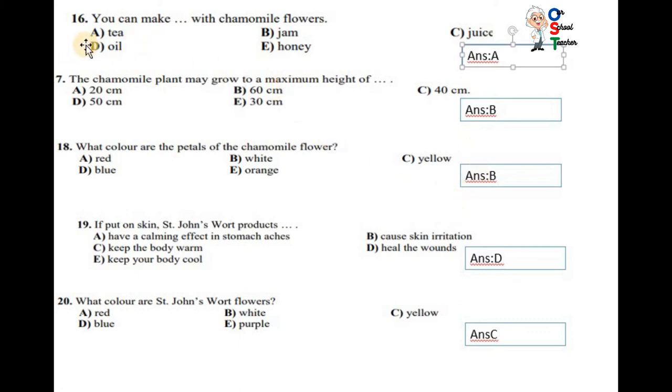Question number 16. You can make dash with chamomile flowers. Tea, jam, honey, oil, juice. A, tea. The chamomile plant may grow to a maximum height of 20 centimeters, 60 centimeters, 40 centimeters, 50 centimeters, 30 centimeters. 60 centimeters.